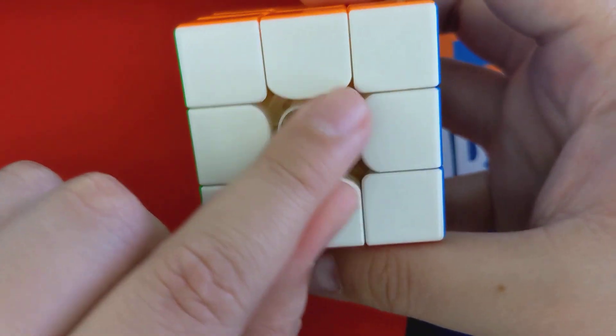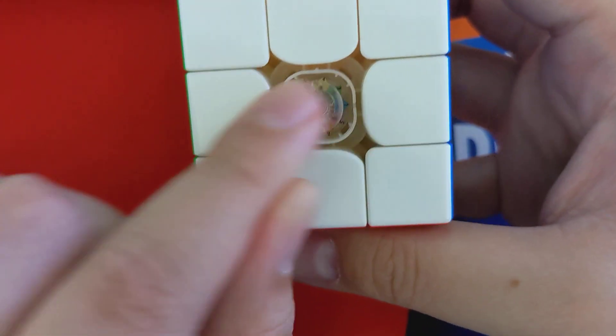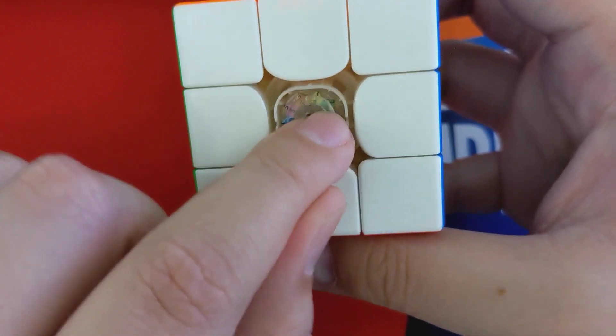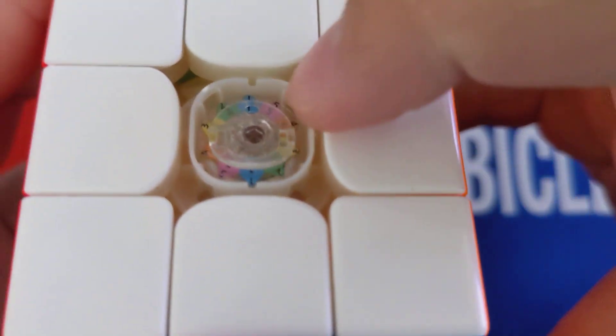The outer ring corresponds to the actual tension of the puzzle, whereas the inner ring is your compression. So the outer ring, let's see if I can focus in. You see these little notches?